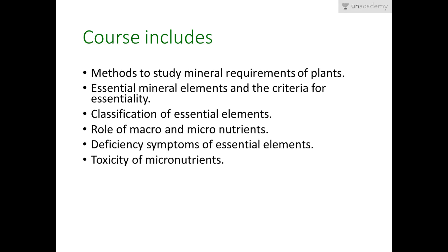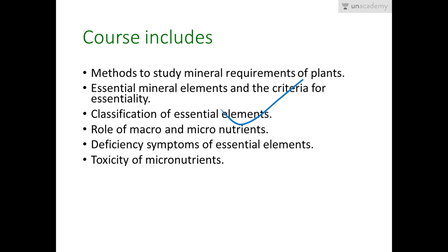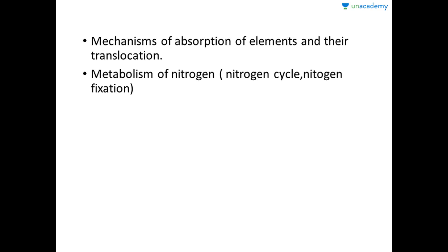This course includes all the basic details and whatever topics we have in our NCERT book. First, we will study about the methods to study the mineral nutrients in plants. Then we will talk about essential mineral elements and the criteria for essentiality, followed by classification of essential elements, role of macro and micronutrients, deficiency symptoms, toxicity of micronutrients, mechanism of absorption, translocation, and finally the metabolism of nitrogen — that is the nitrogen cycle and nitrogen fixation.